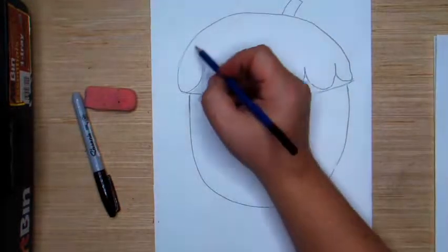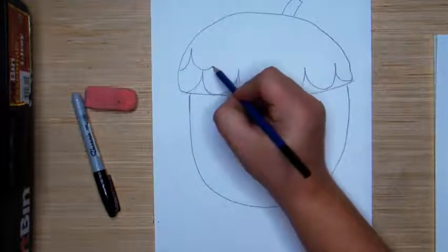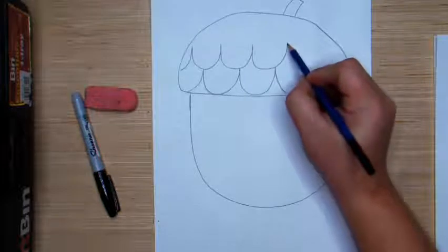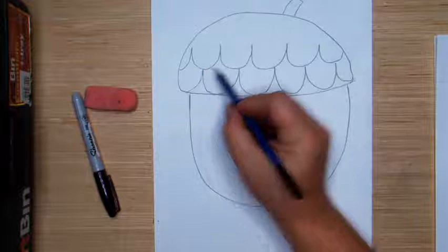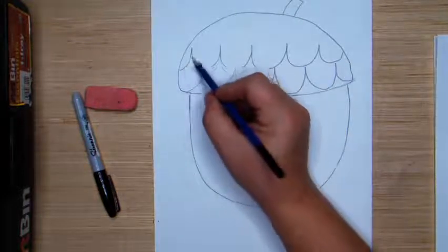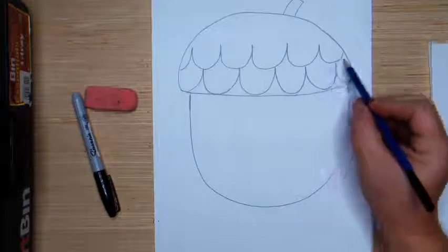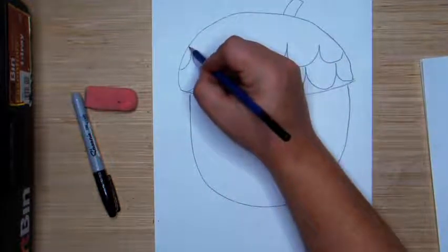Now I am going to do another set of waves. But this time the bottom of my waves are going to touch the top of the waves below it. See how it is touching here? Just like that. And we are going to do just a couple more rows.